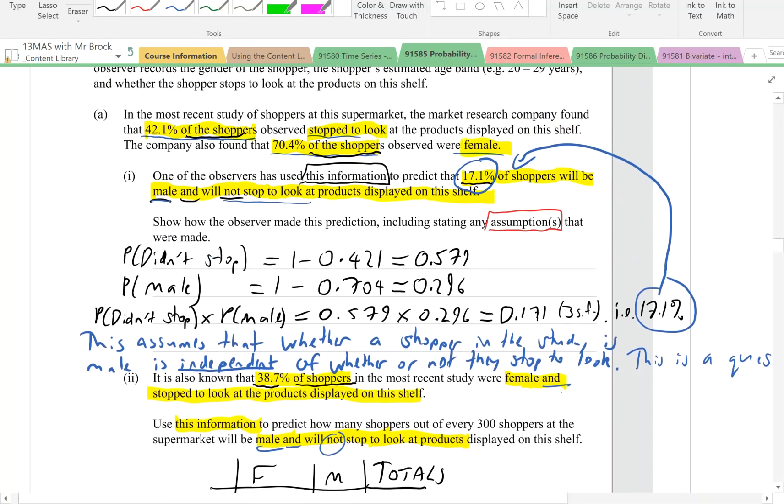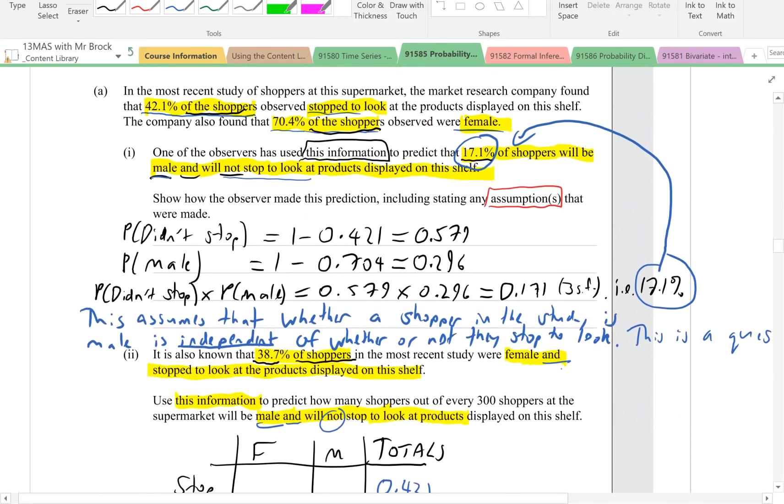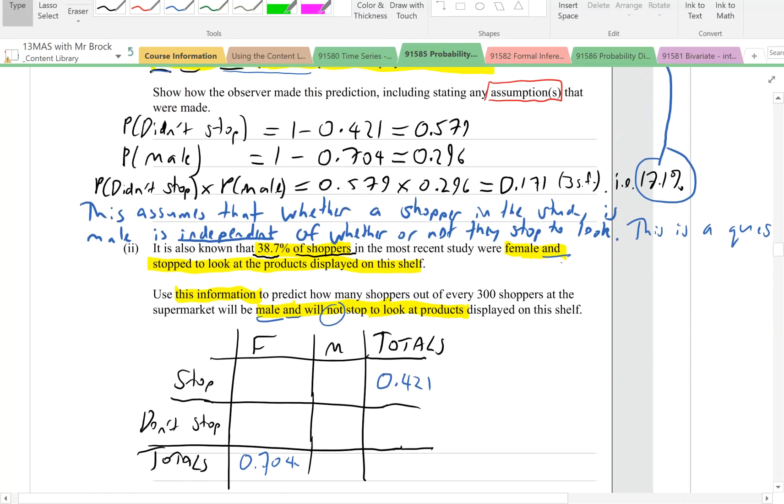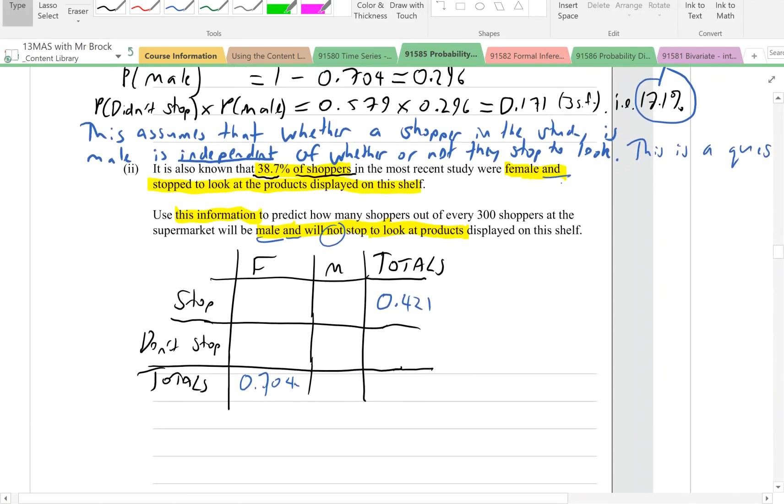We're told that 70.4% of the shoppers were female, so that's going to go in the bottom left total, 0.704. And we've been told that 38.7% of the shoppers were female and stopped to look. So that means the female column and the stopping row, so that's going to go here, 0.387. It's out of 100% or one whole, so that's going to be the grand total. And then we can just fill in the rest by subtracting.